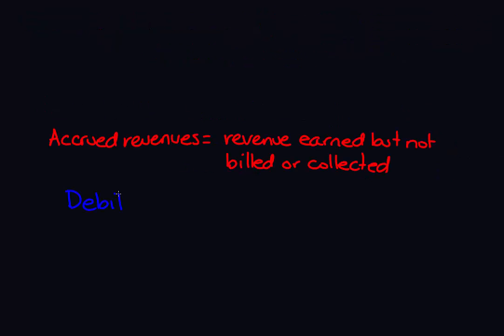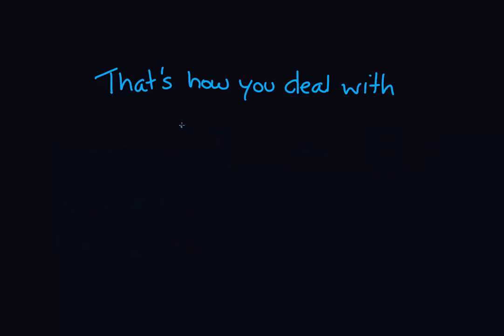So if we go back to our definition of accrued revenues, accrued revenues always include a debit to a receivable account — so to an asset account — and our credit is going to be to a revenue account. And that's how you deal with accruals.